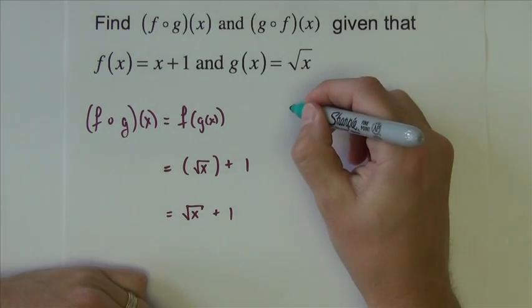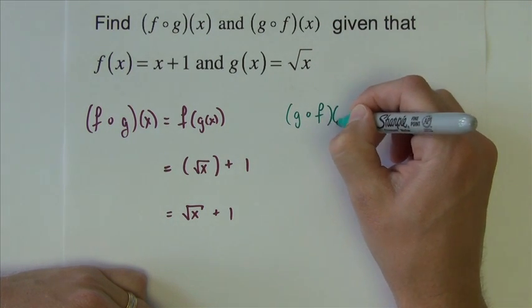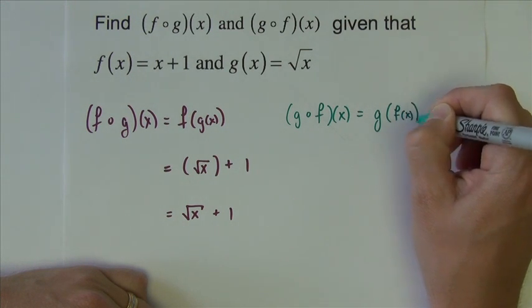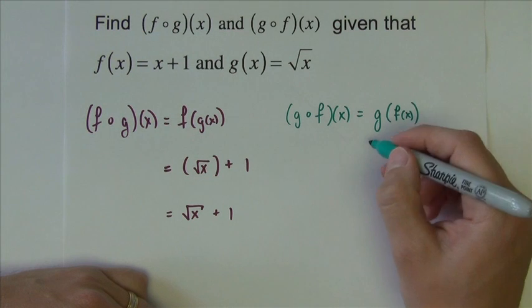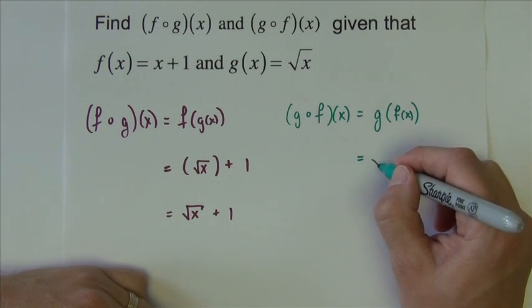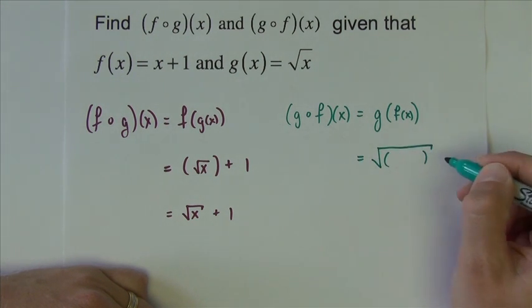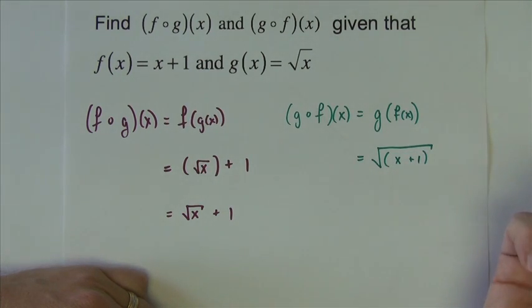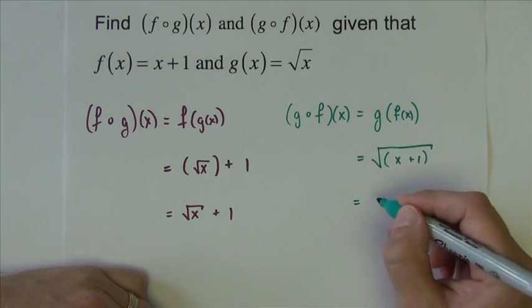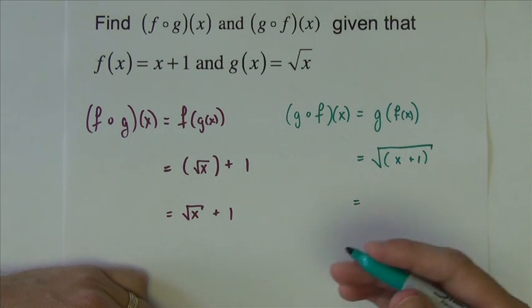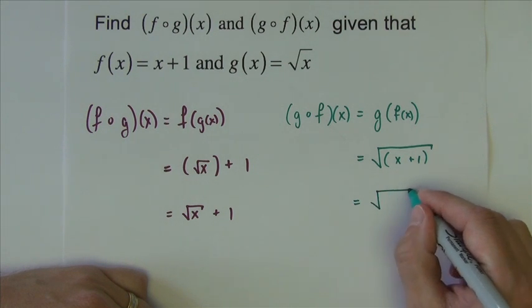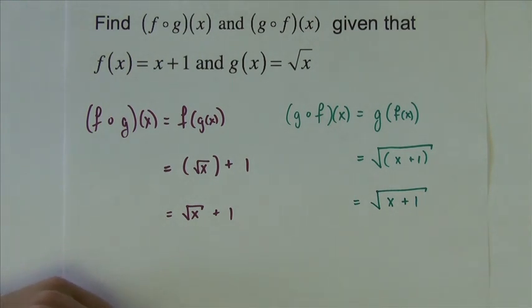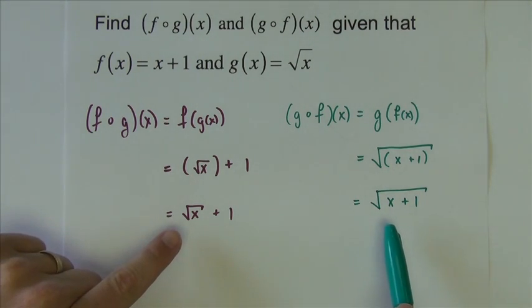The other problem. g of f of x. Again, rewrite if you prefer. g of f of x. So, here I'm going to take the g function. Which is square root of x. And where the x was, I'm going to put the f function x plus 1. Again, there's no real operation to perform. I can't combine like terms. I'm not supposed to square or do anything. This is just square root of x plus 1. Similar looking answers, but again, note that they're different. Again, most of the times the composition is different either way.